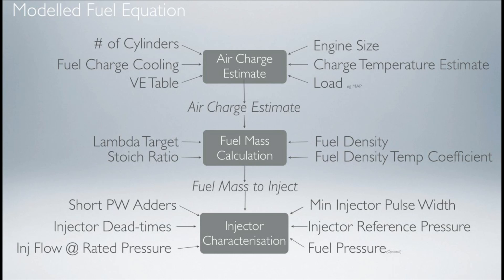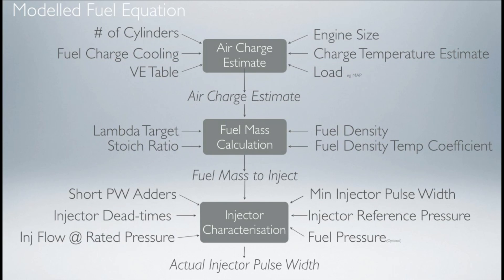If we want the ECU to compensate for different fuel pressures, it's vital to have a fuel pressure sensor. While it is optional, it is definitely recommended for the model fuel equation. Once we have the injector characterization data added onto the fuel mass calculation, it comes together to form the actual injection pulse width — the amount of time the ECU is going to apply to the injectors to get the fueling required for the engine.